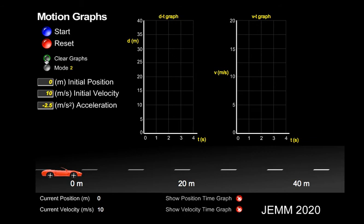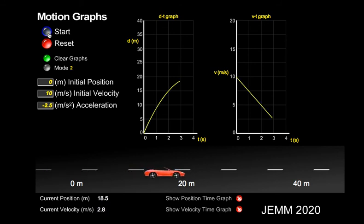Now let's look at the two graphs together for a situation when it's slowing down. The initial velocity is 10 and the acceleration is negative 2.5 meters per second per second. Notice again, on the position time graph you get a curve. On the velocity time graph you get a line, and the slope of that line — the rise over the run — would be negative 2.5. That slope represents the acceleration for a velocity time graph.